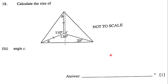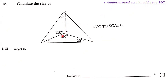Next, our goal is to determine the size of angle C. Angle C is right here. We have a useful geometrical rule which states that angles around a point add up to 360 degrees. Here we have this point, and angles around this point must add up to 360 degrees — it's a full revolution. That means that C, 110, and 130 must add up to 360 degrees.